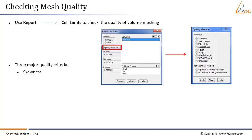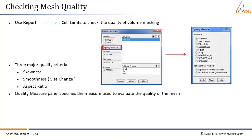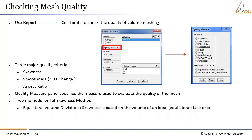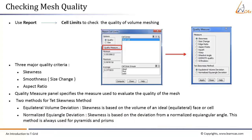Three major quality criteria generally used are skewness, smoothness (change in size), and aspect ratio. The Quality Measure panel specifies the measure used to evaluate mesh quality. Two methods for testing skewness are: Equilateral Volume Deviation — skewness based on the volume of an ideal equilateral face or cell; and Normalized Equiangle Deviation — skewness based on deviation from a normalized equiangular angle. The Normalized Equiangle Deviation method is always used for pyramids and prisms.